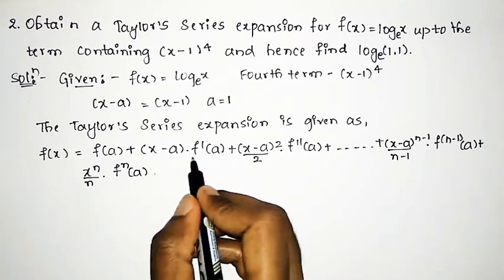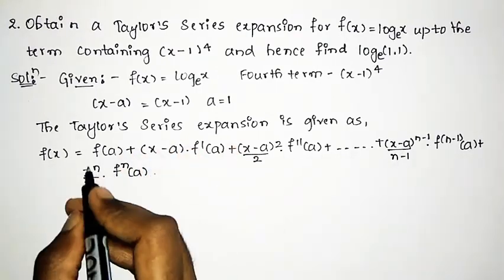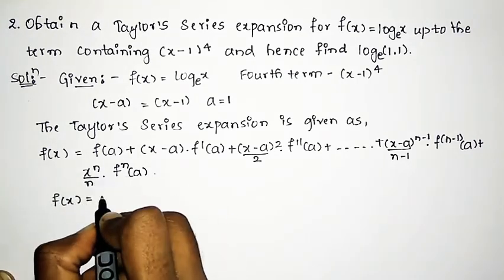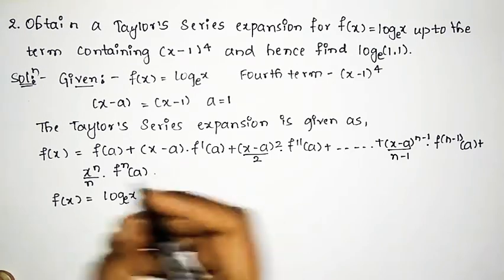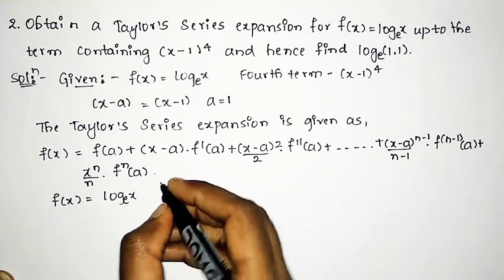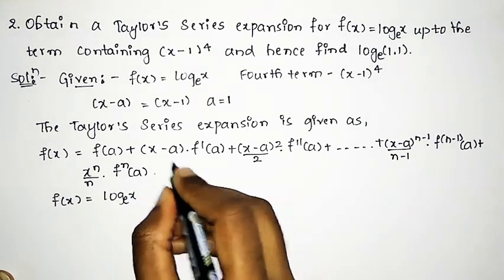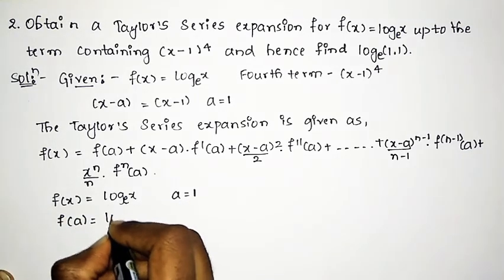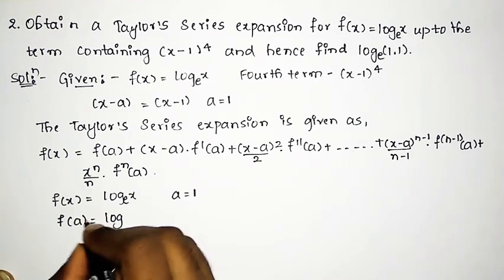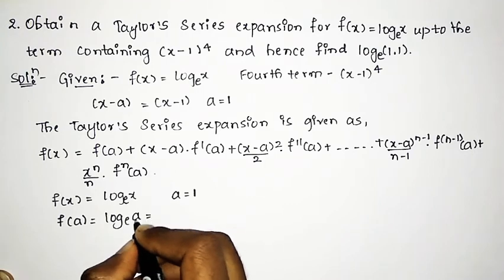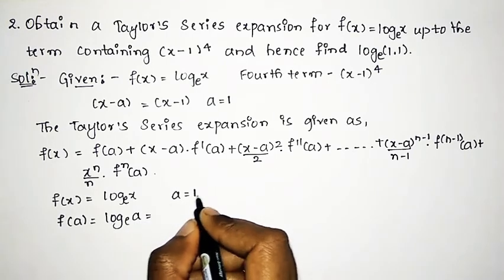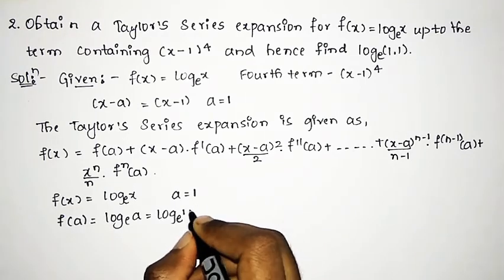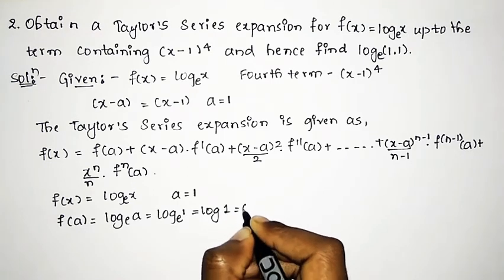We shall find the 1st, 2nd, 3rd, and 4th derivatives. The given equation is f(x) = log x (base e), and a = 1. First, we find f(a): substituting x = a = 1 gives log(1) to the base e, and log(1) = 0. So f(a) = 0.